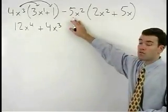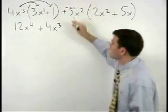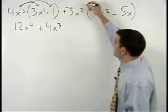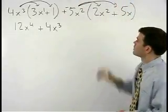Think of this minus 5x² as plus a negative 5x² so that you know you're distributing a negative 5x² through this second set of parentheses.